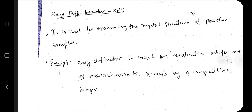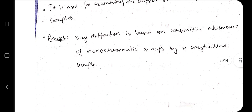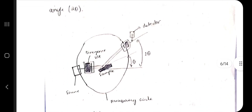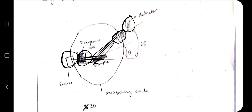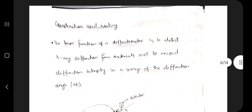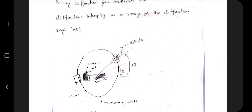In the X-ray diffractometer, the principle is X-ray diffraction based on constructive interference of monochromatic X-rays — meaning single-wavelength light. From the source, the beam is emitted; the divergent slit splits it into different beams. The beams reflect from the sample and reach the detector. The detector moves to a 2θ angle while the sample moves at θ, and the graph is plotted for those angles at which constructive interference occurs.